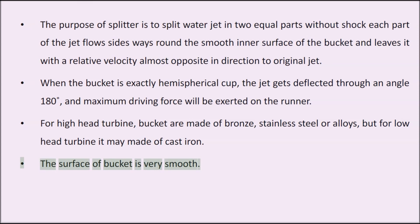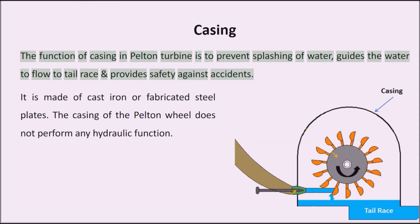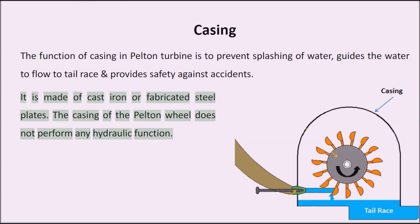Casing: The function of casing in the Pelton turbine is to prevent splashing of water, guide the water to flow to the tail race, and provide safety against accidents. It is made of cast iron or fabricated steel plates. The casing of the Pelton wheel does not perform any hydraulic function.